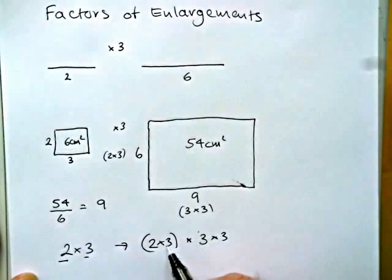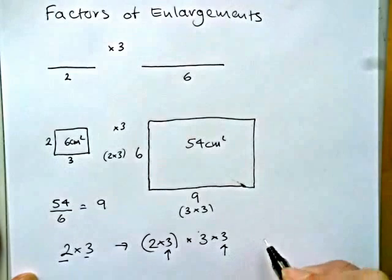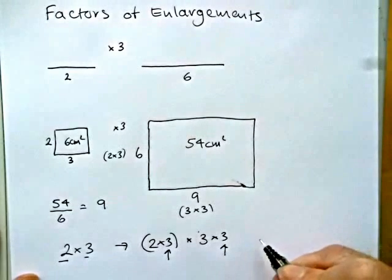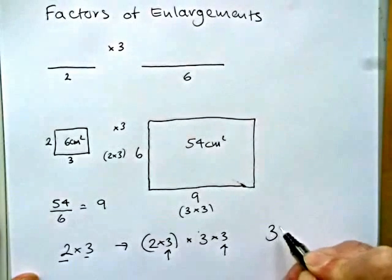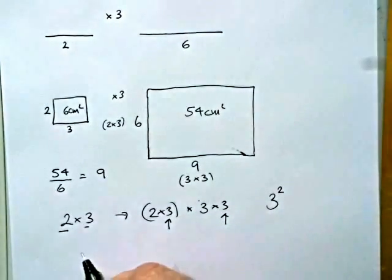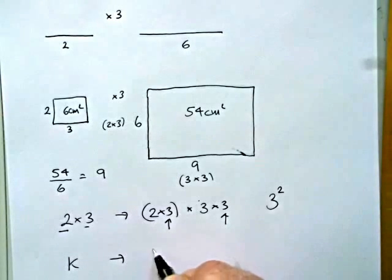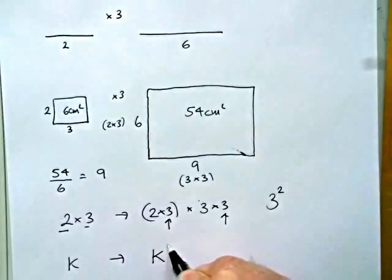So we had a times by 3 factor coming in twice there and there. So the factor on enlargement then is 3 squared. So in general, if we have an enlargement factor of k, then the effect it will have on the area is to enlarge the area by a factor of k squared.